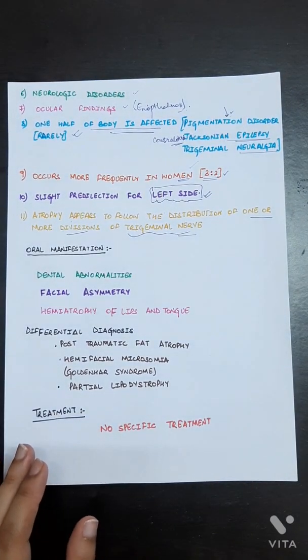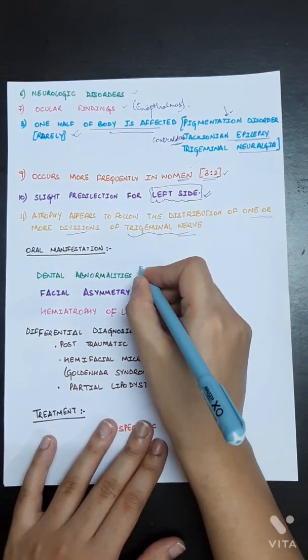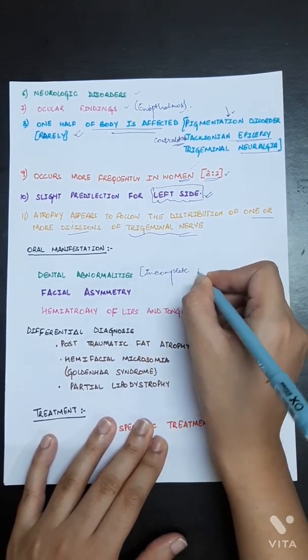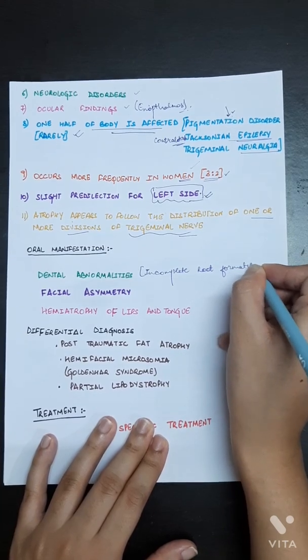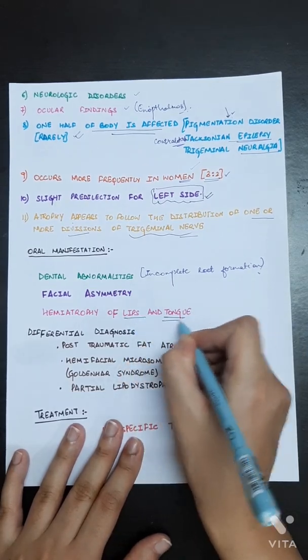Oral manifestations include dental abnormalities which include incomplete root formation, facial asymmetry, hemiatrophy of the lips and tongue.